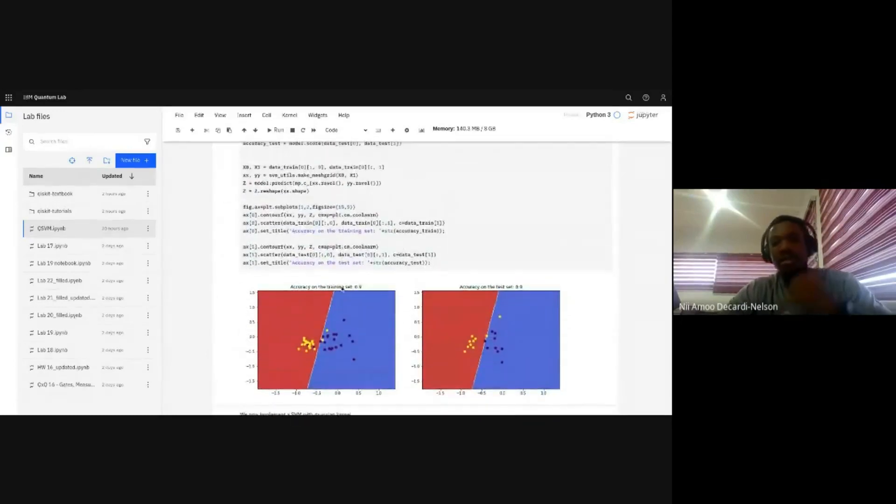Now, this is how the classification would look like if we are using our traditional support vector machine. So after training, we had an accuracy of 90% on the test set. So we have this hyperplane set between these two classes.